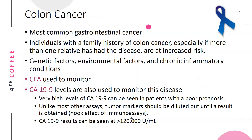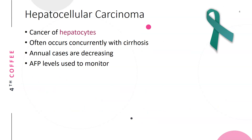CEA is the tumor antigen used to monitor colon cancer. CA19-9 levels are also used to monitor this disease. Very high levels of CA19-9 can be seen in patients with poor prognosis. Unlike most other assays, tumor markers should be diluted until the result is obtained, because CA19-9 is very susceptible to the hook effect of immunoassays. CA19-9 results can be seen at greater than 120,000 units per milliliter, which is very high.